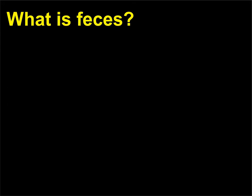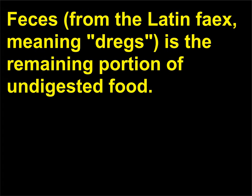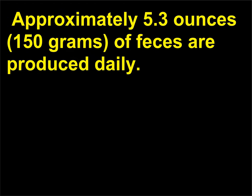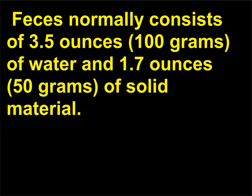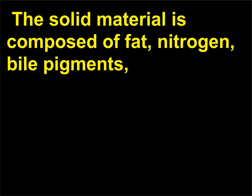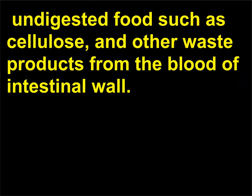What is feces? Feces — from the Latin faex, meaning 'dregs' — is the remaining portion of undigested food. Approximately 5.3 ounces (150 grams) of feces are produced daily. Feces normally consists of 3.5 ounces (100 grams) of water and 1.7 ounces (50 grams) of solid material. The solid material is composed of fat, nitrogen, bile pigments, undigested foods such as cellulose, and other waste products from the blood of the intestinal wall.